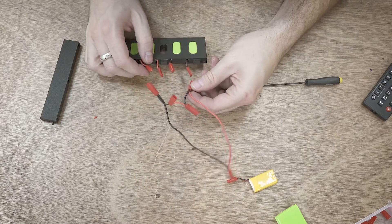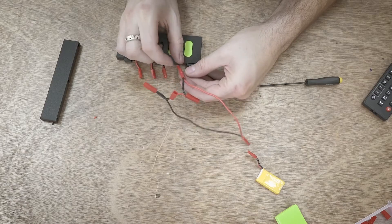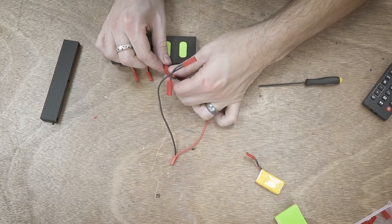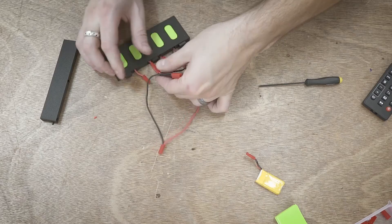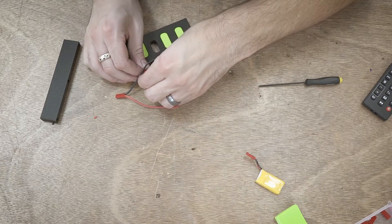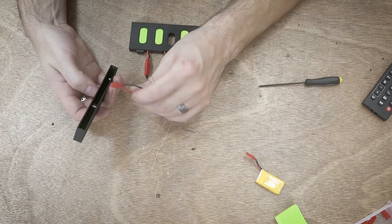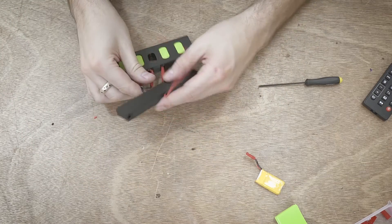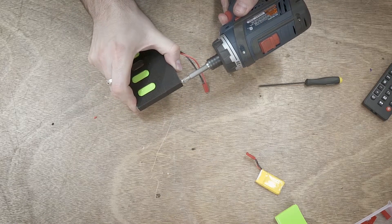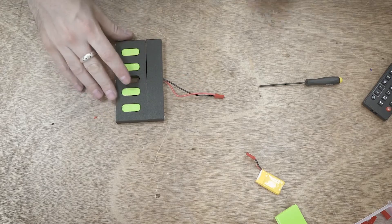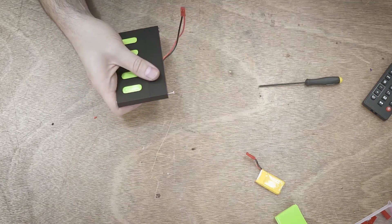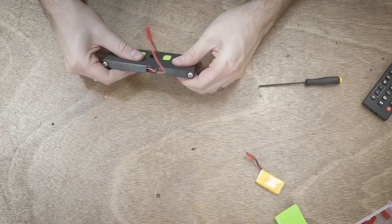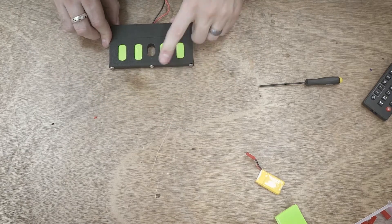I'm going to make sure this is all good. I start with one end, which is the positive, make sure that lines up. Then just connect these down the row. There we go. All we need to do is just shove this through the little hole.